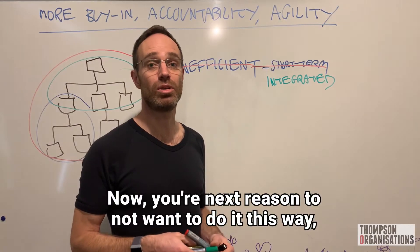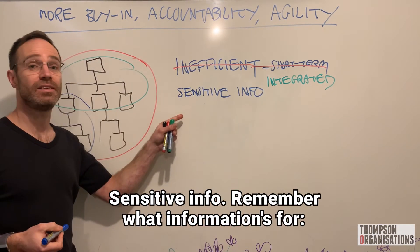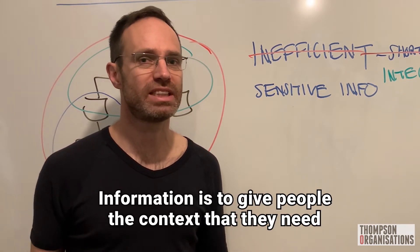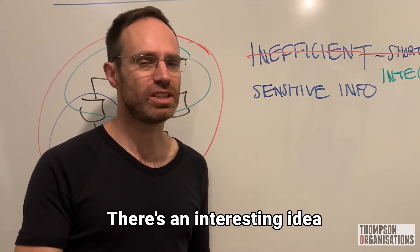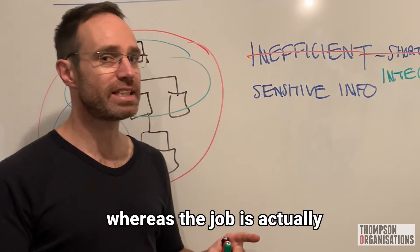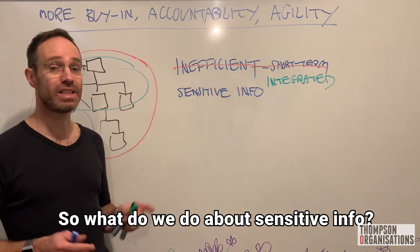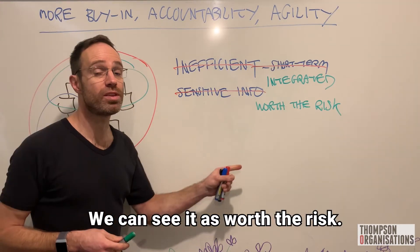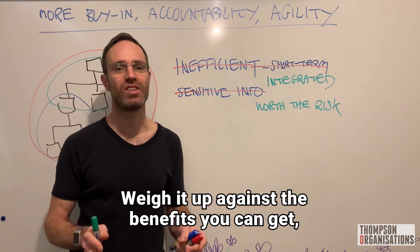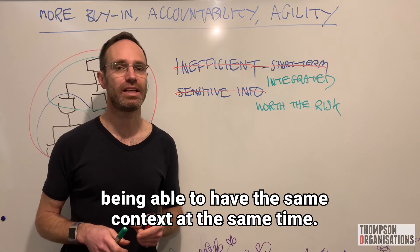Your next reason not to do it this way is also fair: sensitive info. Remember what information is for — it's to give people the context they need to do their job. We often think the job is to control information, whereas it can actually be to make sure information gets out. So what do we do about sensitive info? We can see it as worth the risk, and weigh it against the benefits of everyone having the same context at the same time.